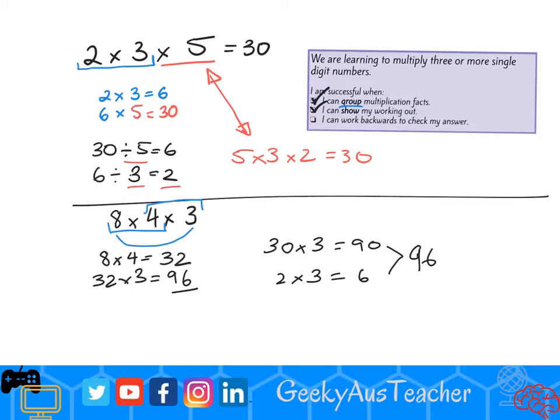Now let me check my answer. Ninety-six divided by three is thirty-two. Thirty-two divided by eight equals four. So I can go back to three times eight times four. I can work backwards to check my answer.